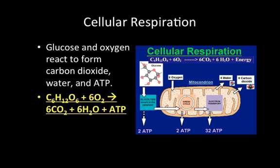This is the money equation — this is where we get all of that energy stored inside our bodies to perform any type of function. So we got glucose and oxygen going in. We can either ingest this, or if we're a plant, they make their own glucose and oxygen and produce carbon dioxide, water, and ATP. You either ingest it or you make your own, depending on whether you're an animal or a plant. We start with glucose and oxygen, and we make carbon dioxide, water, and ATP.